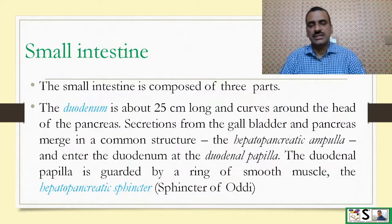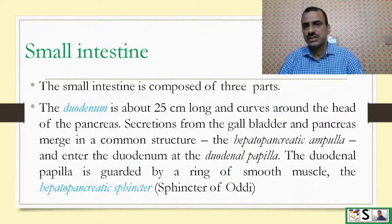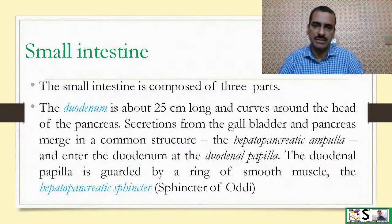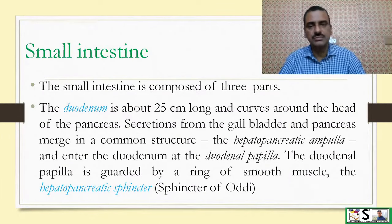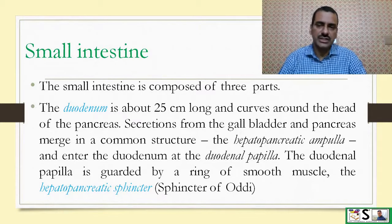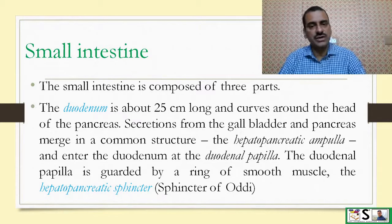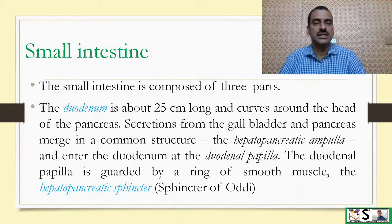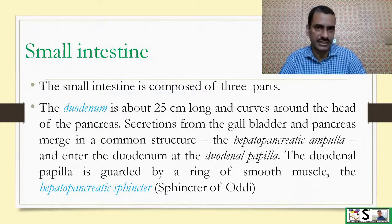The small intestine is composed of three different parts: duodenum, jejunum, and ileum. The duodenum is about 25 centimeters long and it curves around the head of the pancreas.